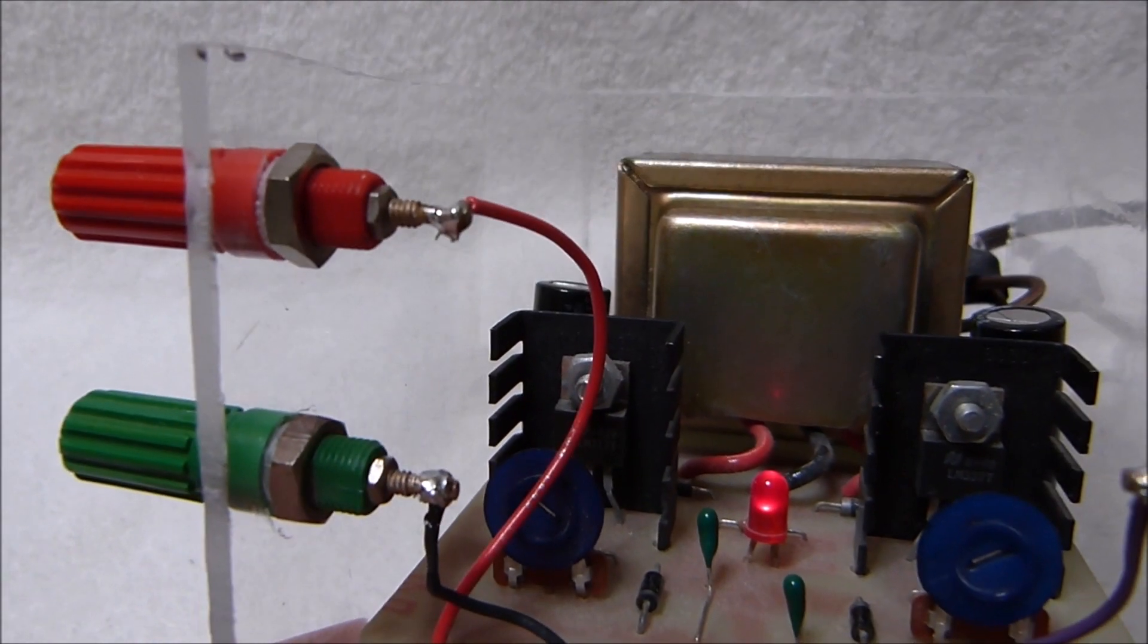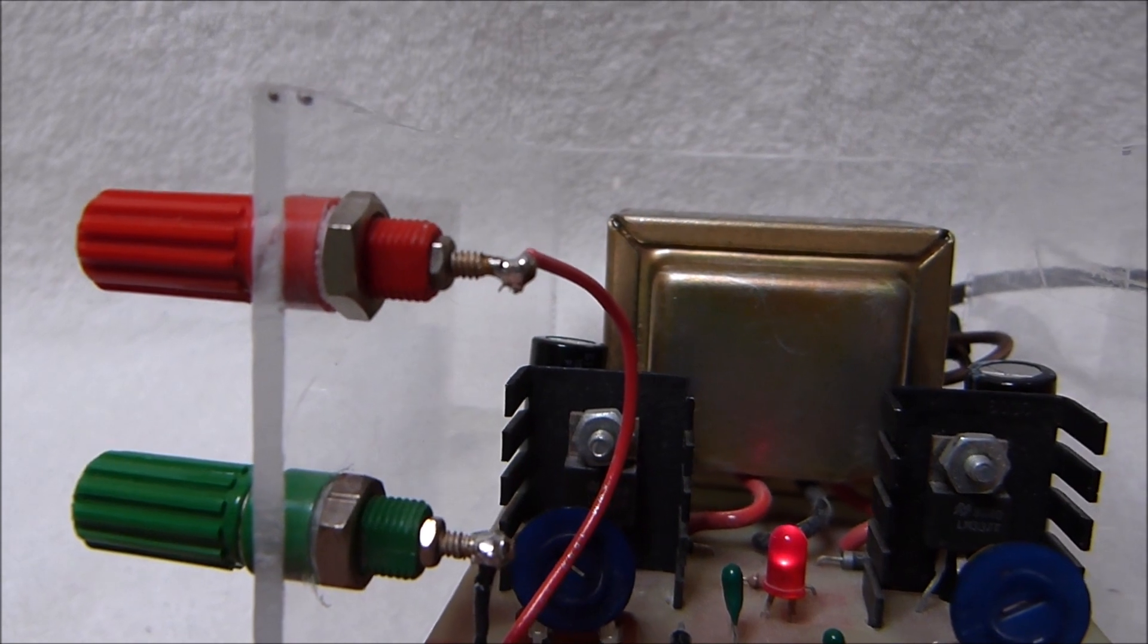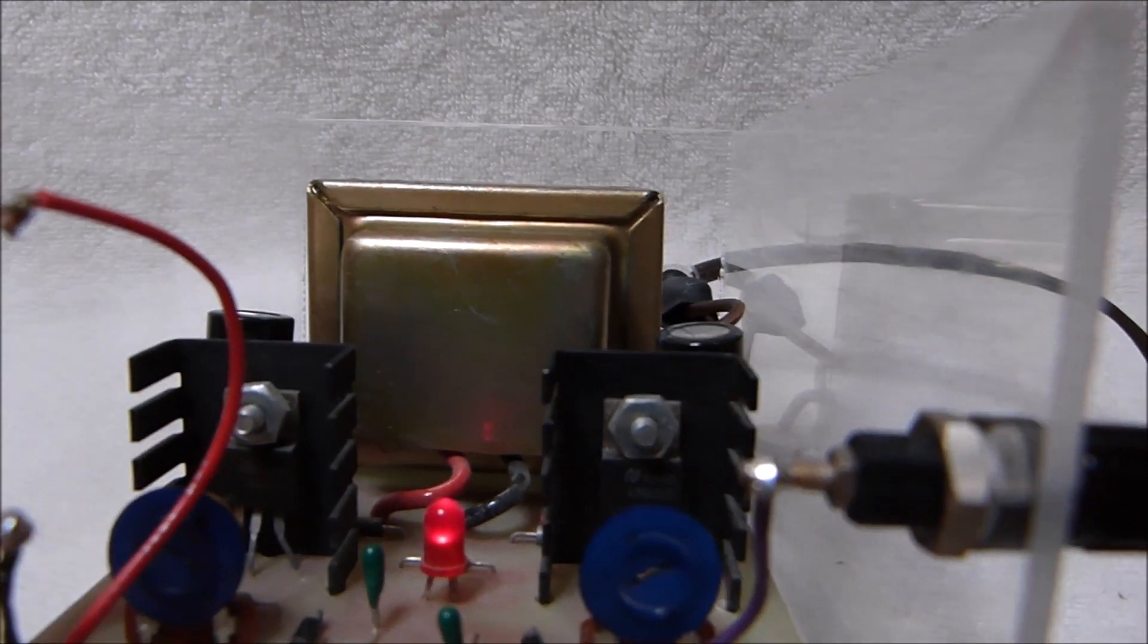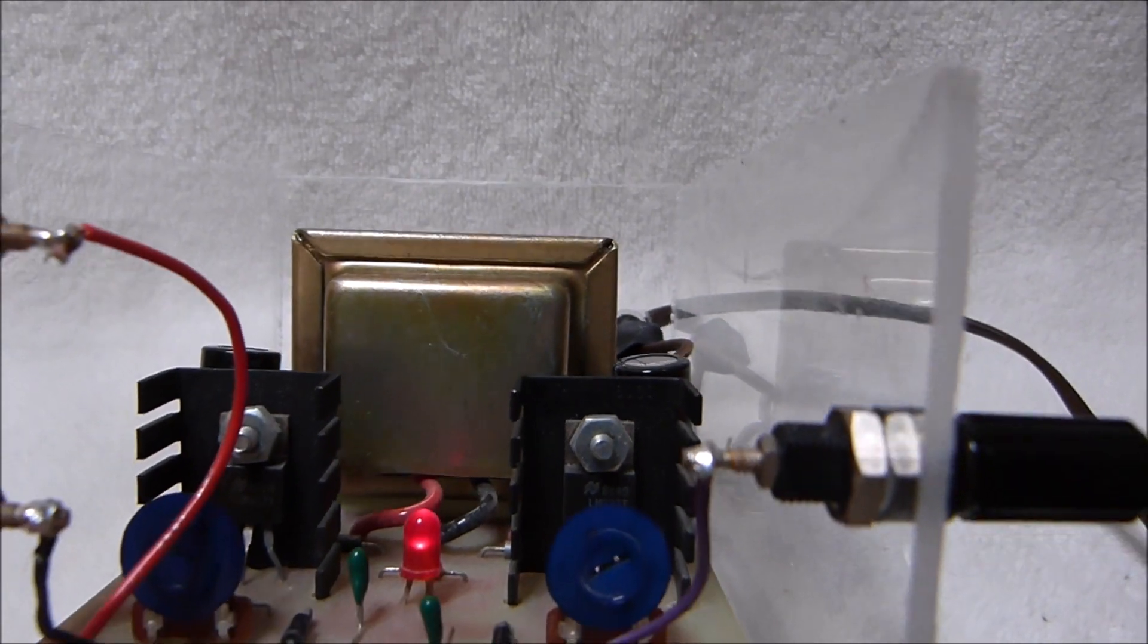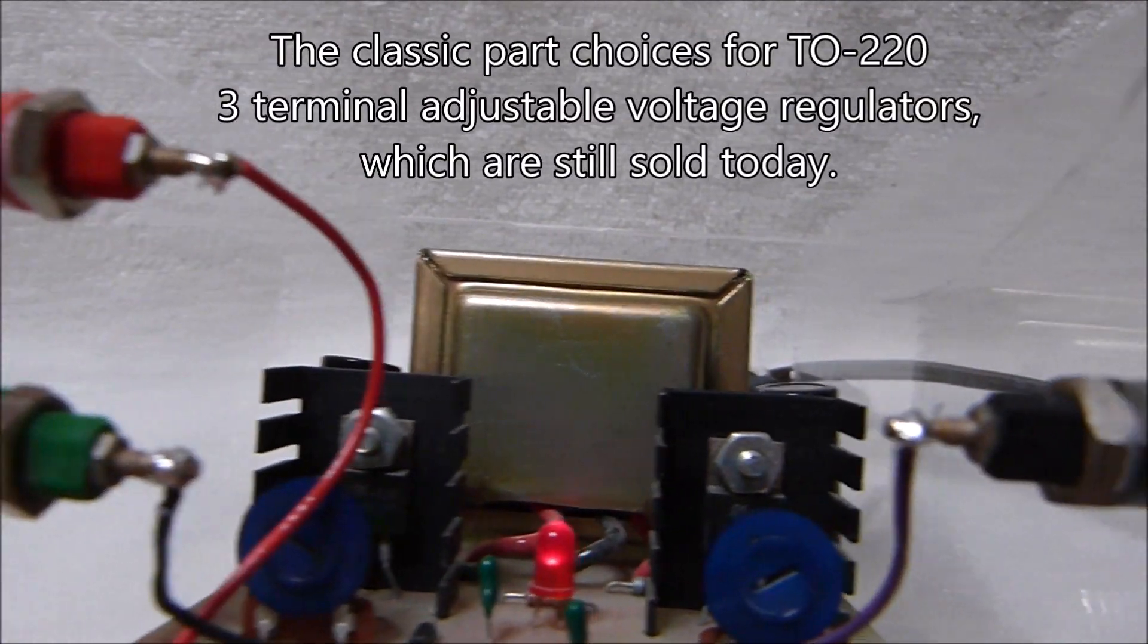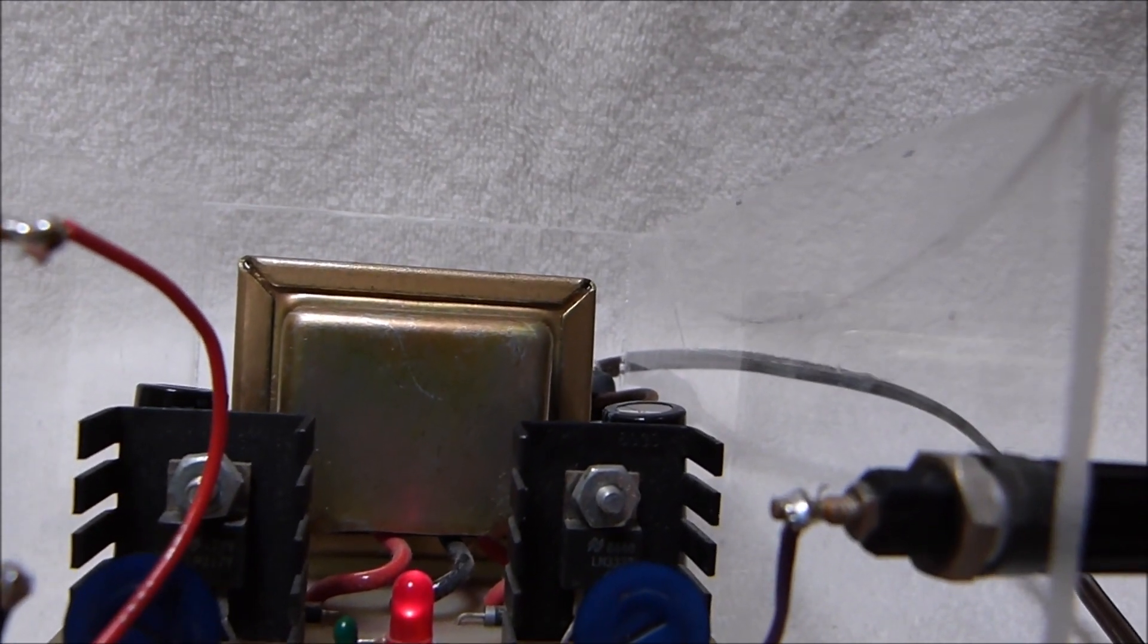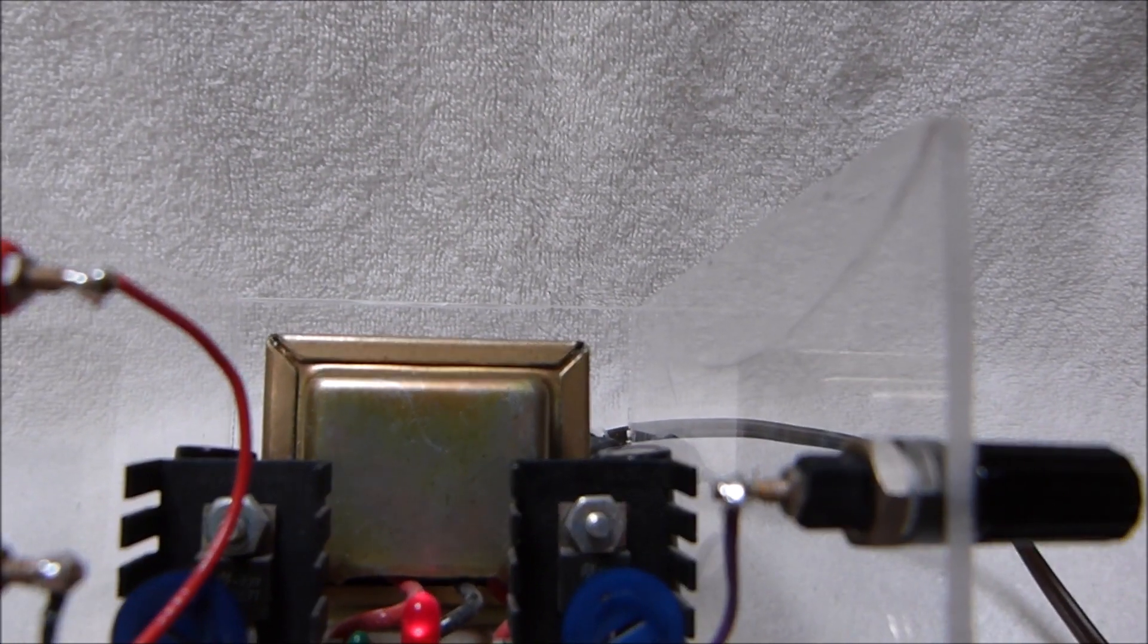It has two adjustable regulators: a LM317T positive voltage regulator and a LM337T negative voltage regulator. The one there has a date code of 8440 which I think is the 40th week of 1984.